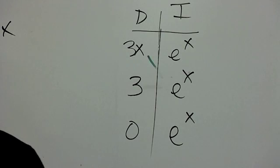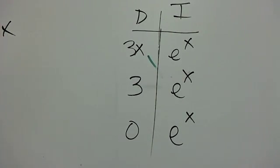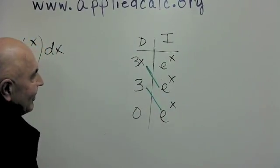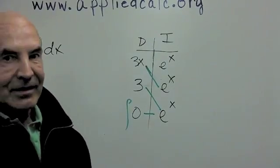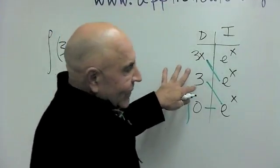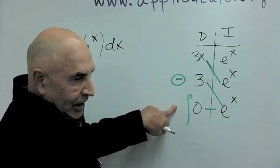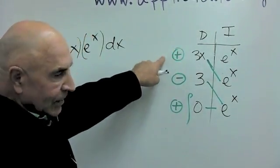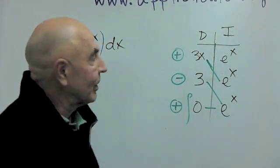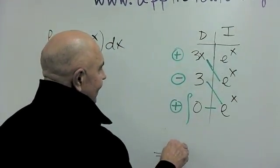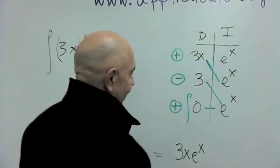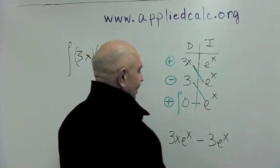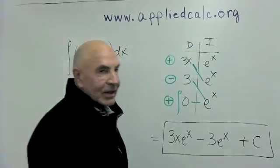Zero times e to the x is really easy to integrate — it's zero. Now multiply those two, and again multiply these two. There's this complication about the sign: remember there was a negative sign, so that goes there again. And if you take a negative twice, you get a plus. The easy way to remember this is to start with a plus sign and write alternating signs all the way down: plus, minus, plus. The answer is 3x times e to the x, minus 3 times e to the x, plus zero, which we don't bother to write. The integral of zero is zero plus a constant. So once again we have the answer, without having to even do an integral.